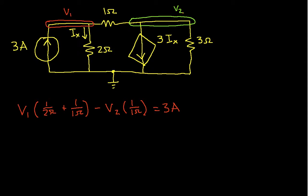Let's look at node 2. Node 2, I will have minus V1 times 1 over 1 ohm plus V2 times 1 over 1 ohm plus 1 over 3 ohms. And now I have a current source. This 3 times IX is the current that's leaving the node due to a current source. So if it's leaving the node, it will be negative 3 IX.